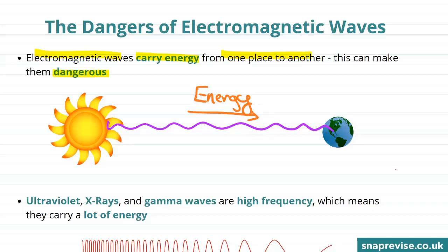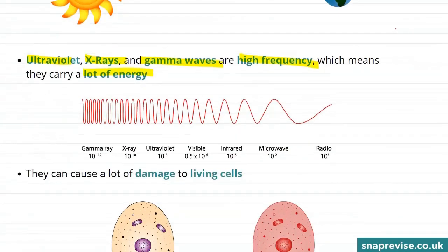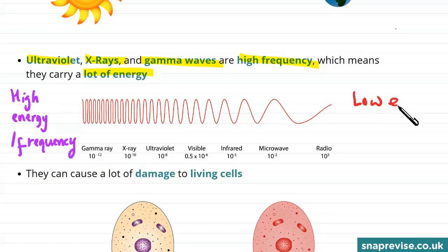In particular some electromagnetic waves can be more dangerous than others. For example ultraviolet, x-rays and gamma waves are all high frequency waves and this means that they carry a lot of energy. So we see we have the high energy, high frequency part of the spectrum here. And so the low energy, low frequency part of the spectrum over here.